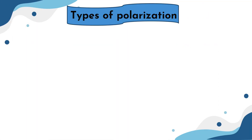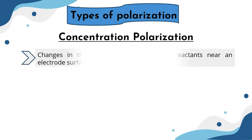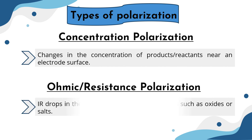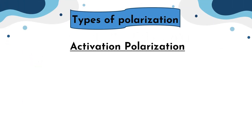There are three types of polarization. The first one is concentration polarization, which is caused by changes in the concentration of products or reactants near an electrode surface. Ohmic or resistance polarization is caused by IR drops in the solution or across surface films such as oxides or salts.